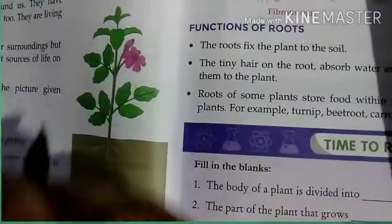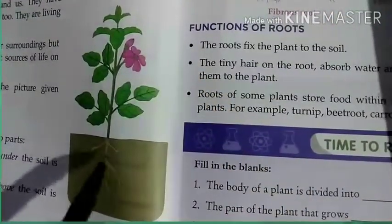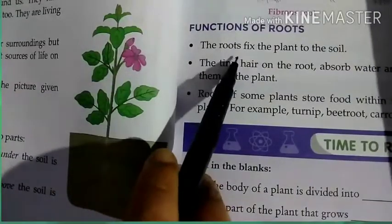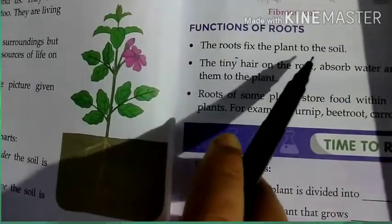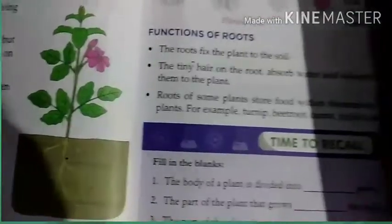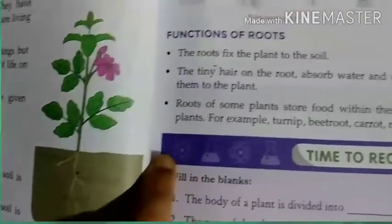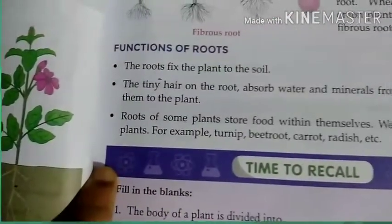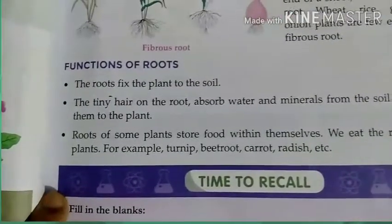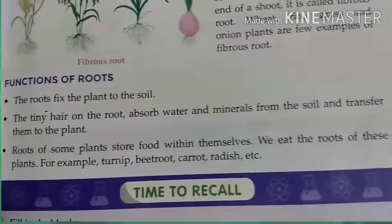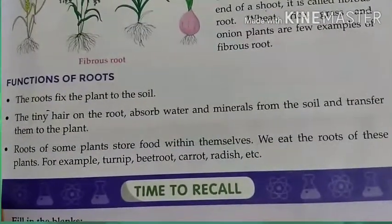The root fixes the plant to the soil — that is the main function of the root. The main function of root is to fix the plant to the soil. The second function: the tiny hairs of the roots absorb water and minerals from the soil and then transfer them to the plant.